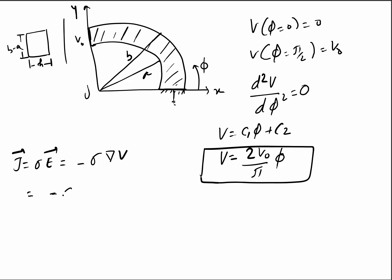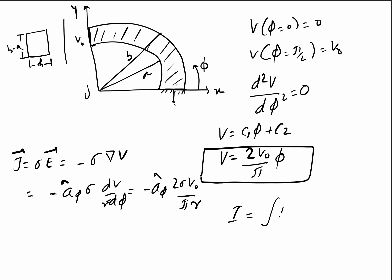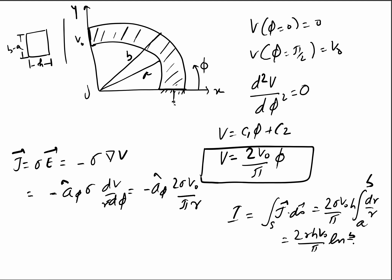Taking only the gradient in the phi direction: J = −a_phi · sigma · (1/r) · dV/dphi = −a_phi · (2·sigma·V₀) / (π·r). The total current I = ∫J·dS evaluates to (2·sigma·V₀/π) · h · ∫(dr/r) from a to b, giving I = (2·sigma·h·V₀/π) · ln(b/a).